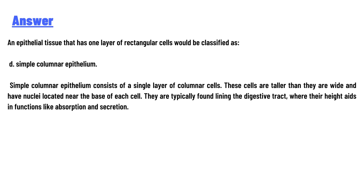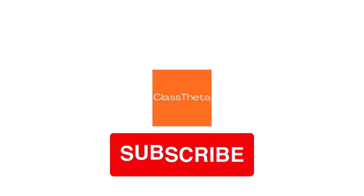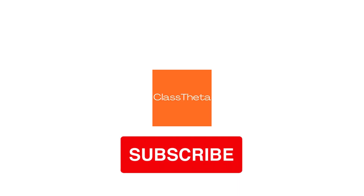Simple columnar epithelium consists of a single layer of columnar cells. These cells are taller than they are wide and have nuclei located near the base of each cell. They are typically found lining the digestive tract, where their height aids in functions like absorption and secretion.